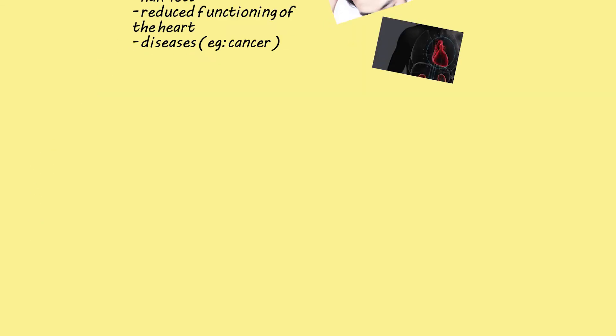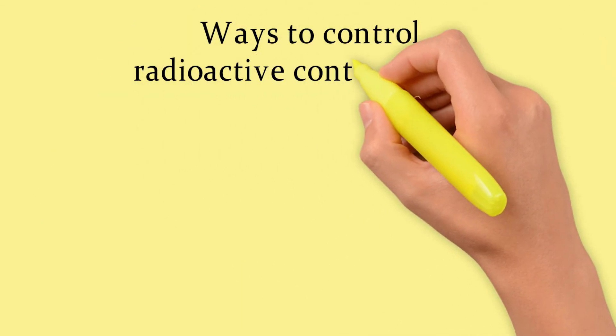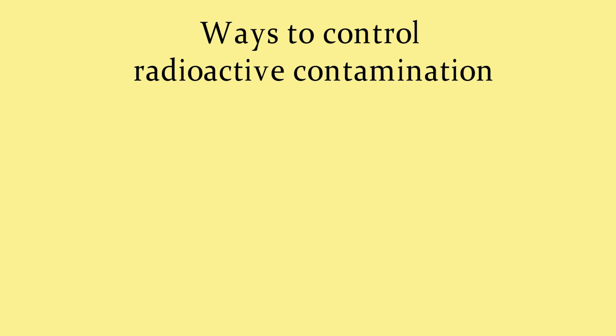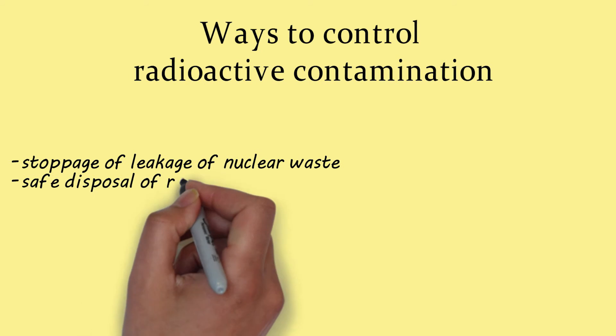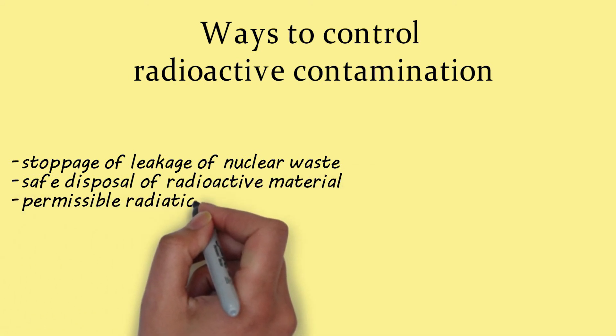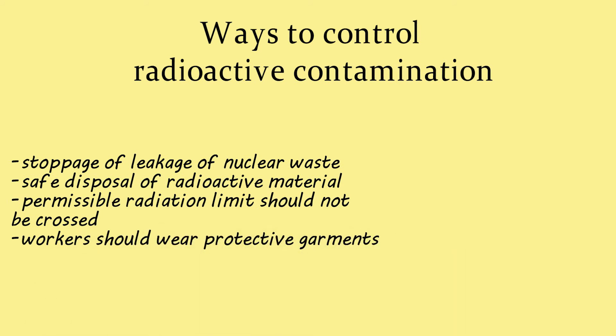We can attempt to control radioactive contamination in many ways such as stoppage of leakage of materials from nuclear reactors, safe disposal of radioactive material, the permissible radiation limit should not be crossed and workers in nuclear plants should wear protective garments.